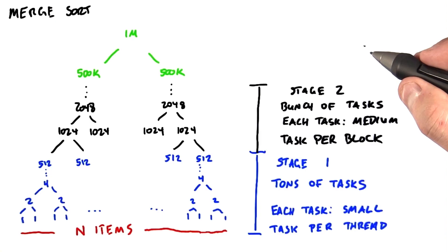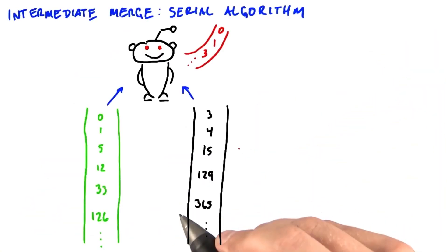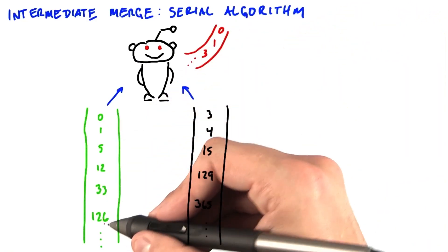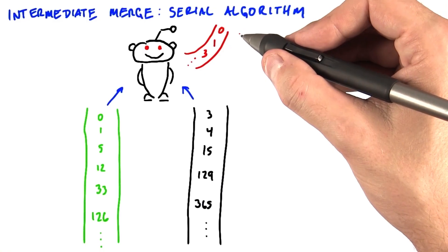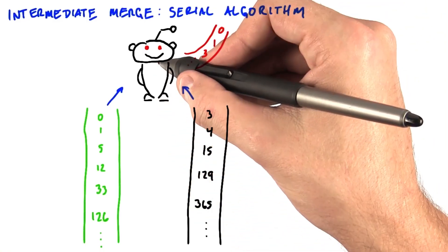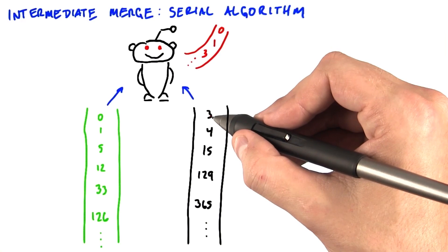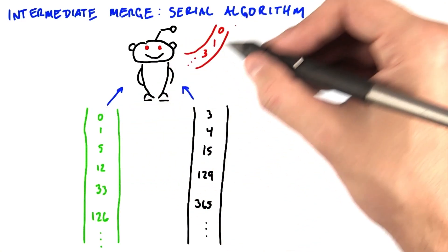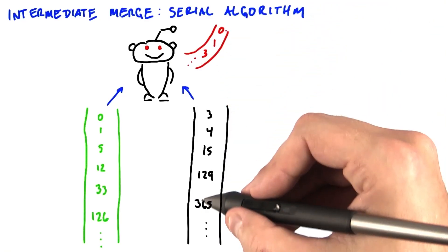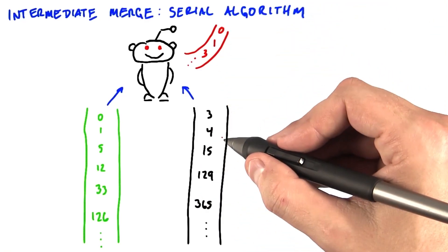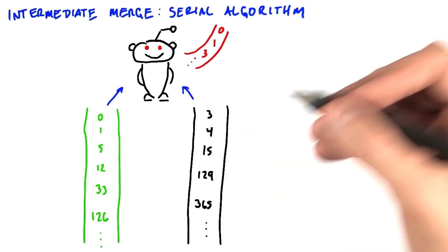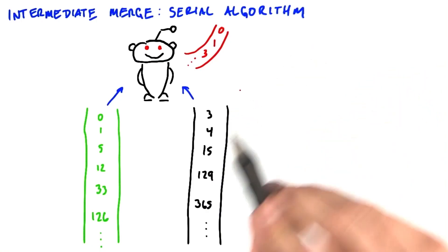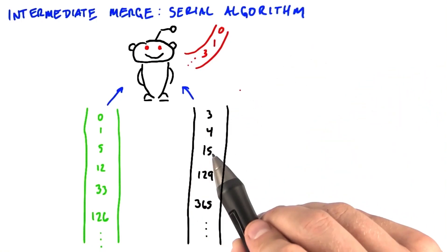We'll come back to this diagram a little bit later. The obvious way to merge two sorted sequences is a serial algorithm. The input to this algorithm is two sorted sequences, and the output is one sorted sequence. The serial processor looks at the head of each sorted sequence, chooses whichever element is smaller, outputs it onto the tail of the output sequence, and then advances the input sequence from which it took the previous element. However, this would be a poor match for the GPU because this is a serial algorithm and it wouldn't keep all of our hardware busy. So it's instructive to look at another way — a better way, a more parallel way — to merge two sorted sequences.